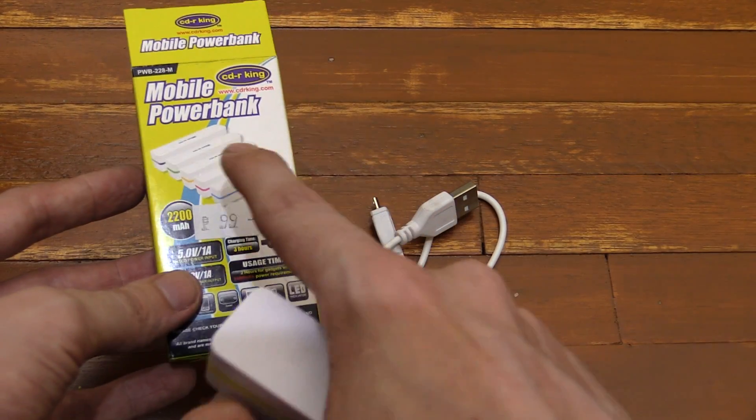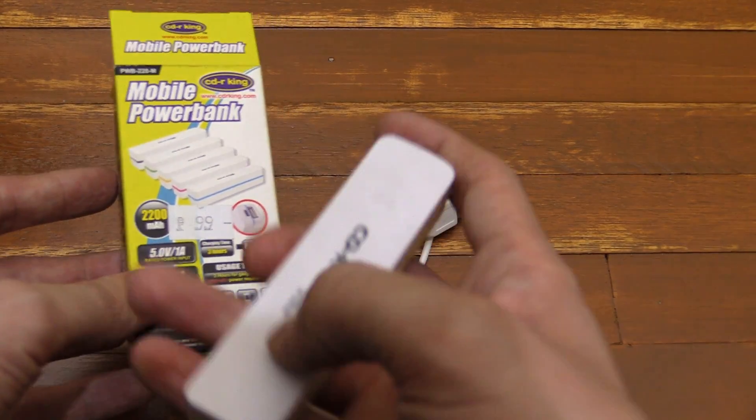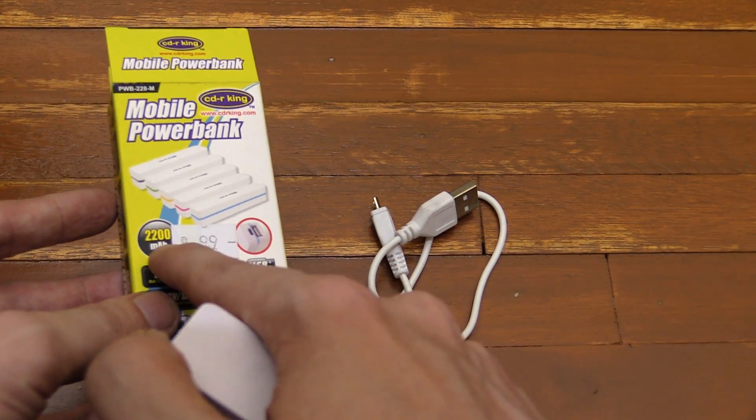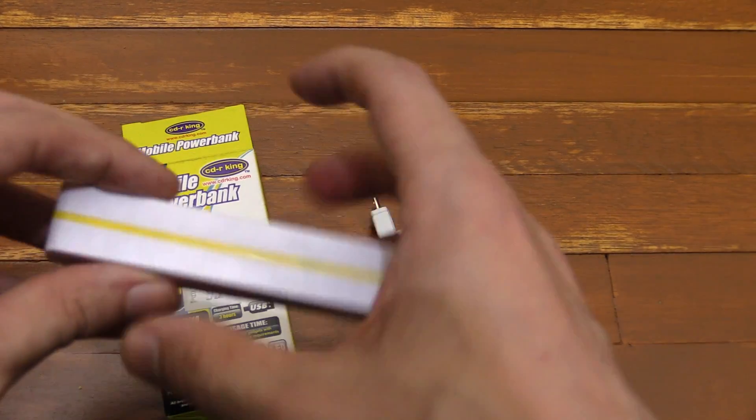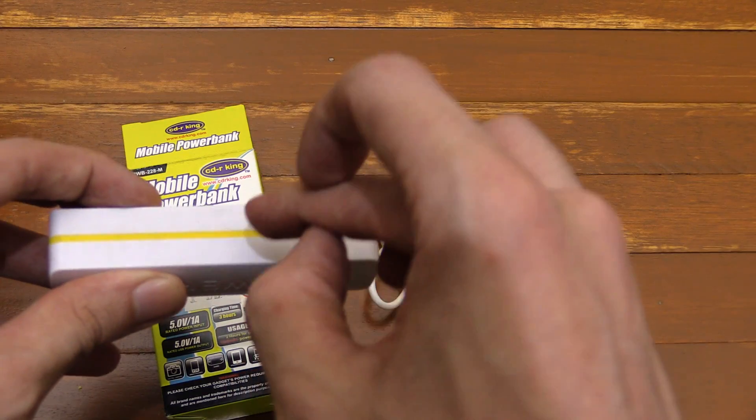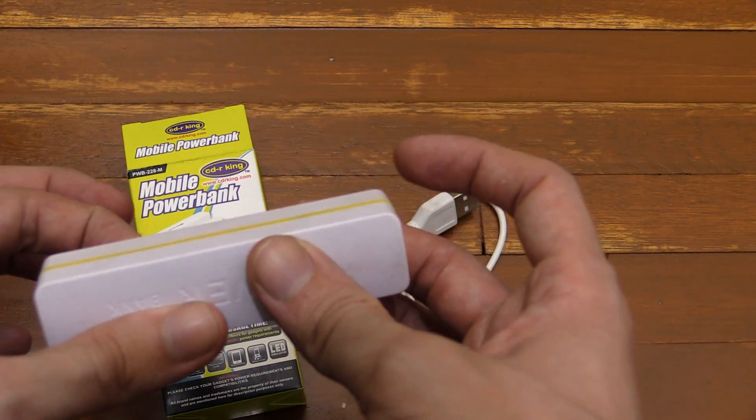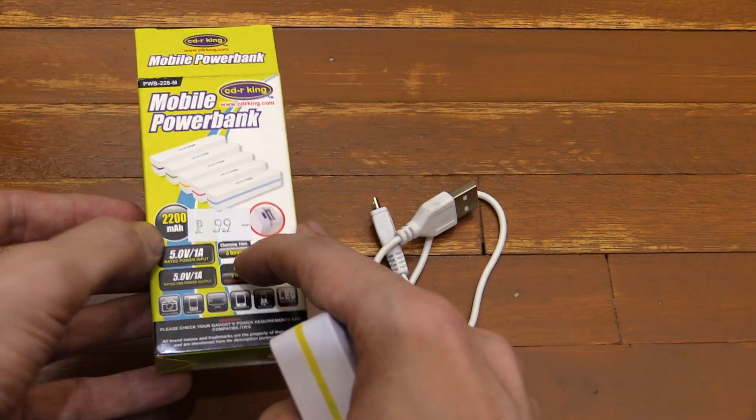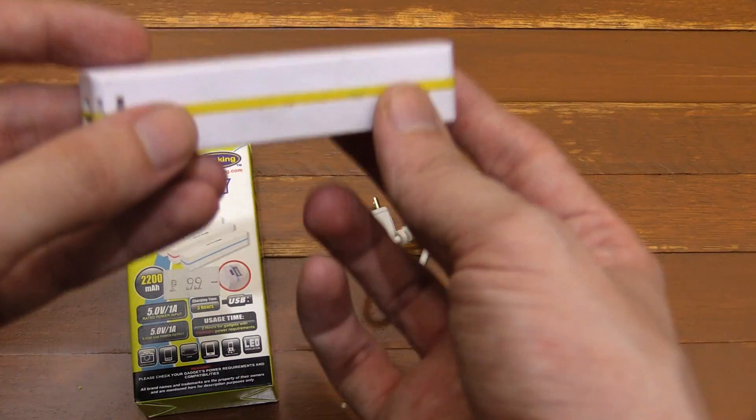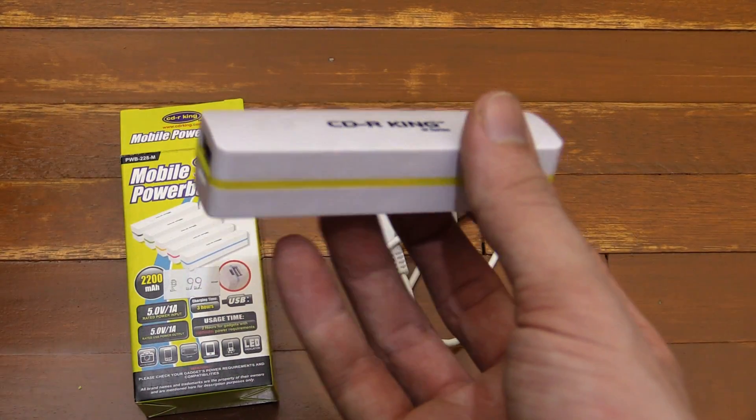Now, some people get confused about the rating of the battery. For instance, this is 2200 milliamp hour, but that is at the battery itself inside, which is 3.7 volts. So if you multiply 3.7 by 2.2, which is amp hours, you get around 8 watt hours, 8.1 watt hours.